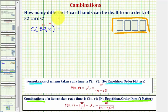So this is equal to n factorial, or 52 factorial, divided by n minus r factorial times r factorial, which would be 52 minus four factorial times four factorial, which would be 52 factorial divided by 48 factorial times four factorial.